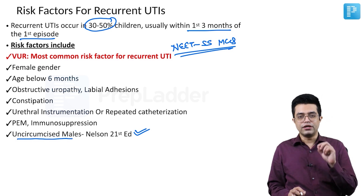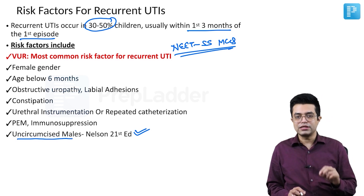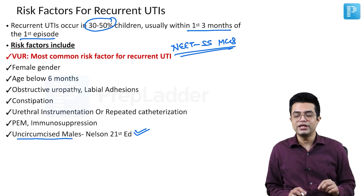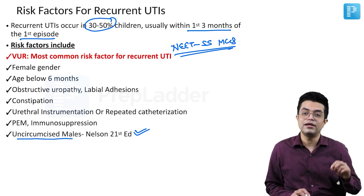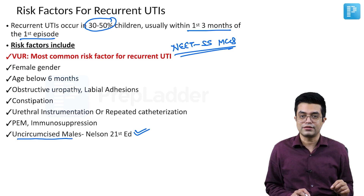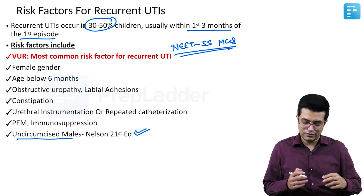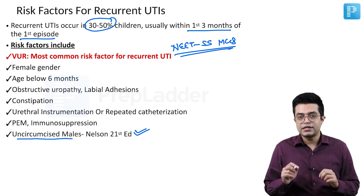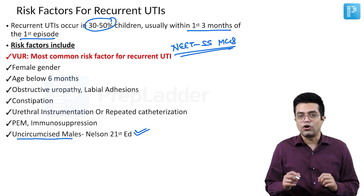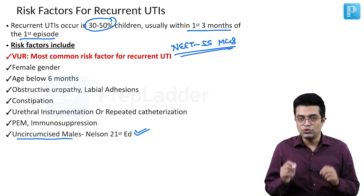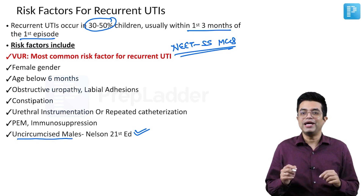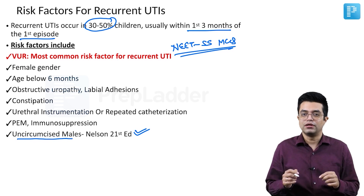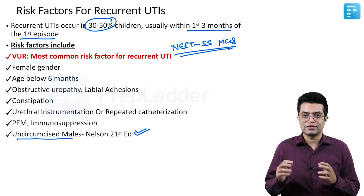Malnutrition and immunosuppression can cause UTIs. Uncircumcised males are an important risk factor according to Nelson 21st edition. Circumcision reduces the chances of UTI in male infants, as circumcised males have a lower risk compared to uncircumcised males.